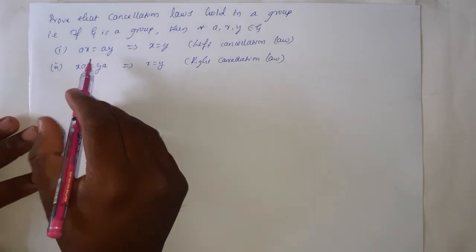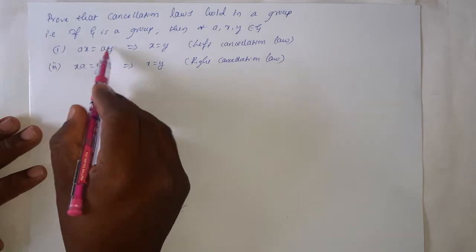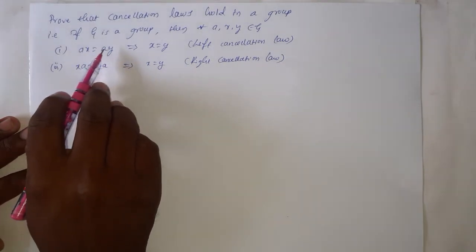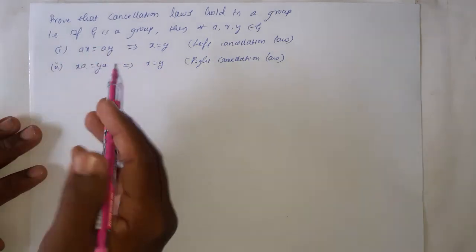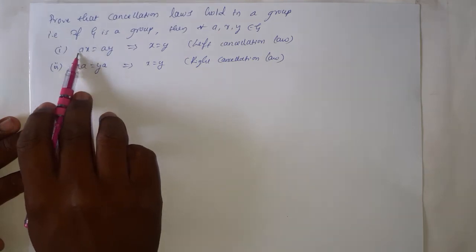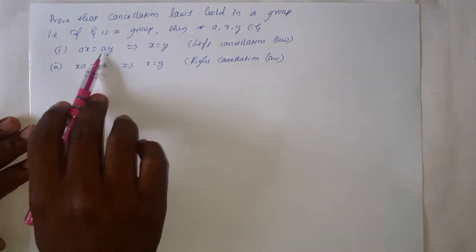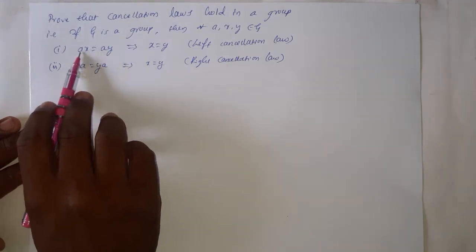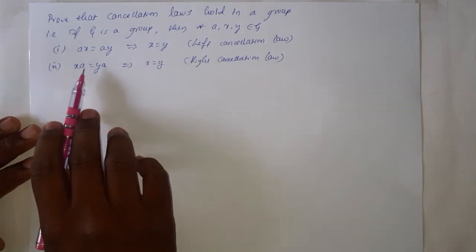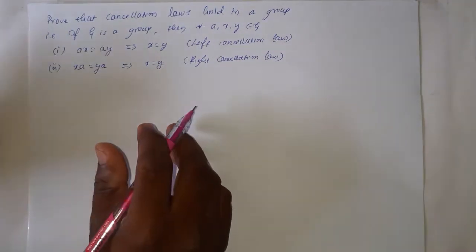We cannot directly cancel elements in group theory. If A exists on the left side of both variables — that is, on the left side of X we have A, and on the left side of Y we have A — then only we can cancel out A and write X equal to Y. Similarly for the right side of X and Y. Now let us prove this.